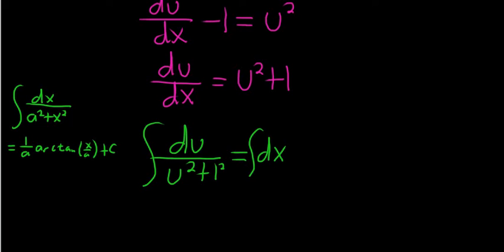So here there's a 1 squared. So it's 1 over 1, which is 1. So we just get arctan of u. On the right-hand side, we get x plus our arbitrary constant C.